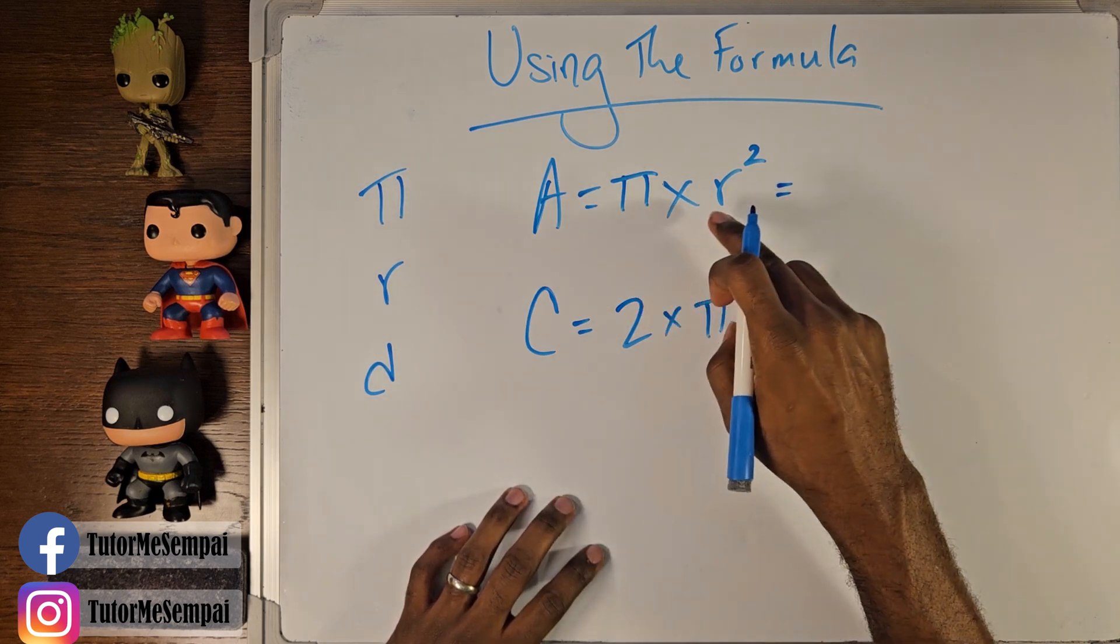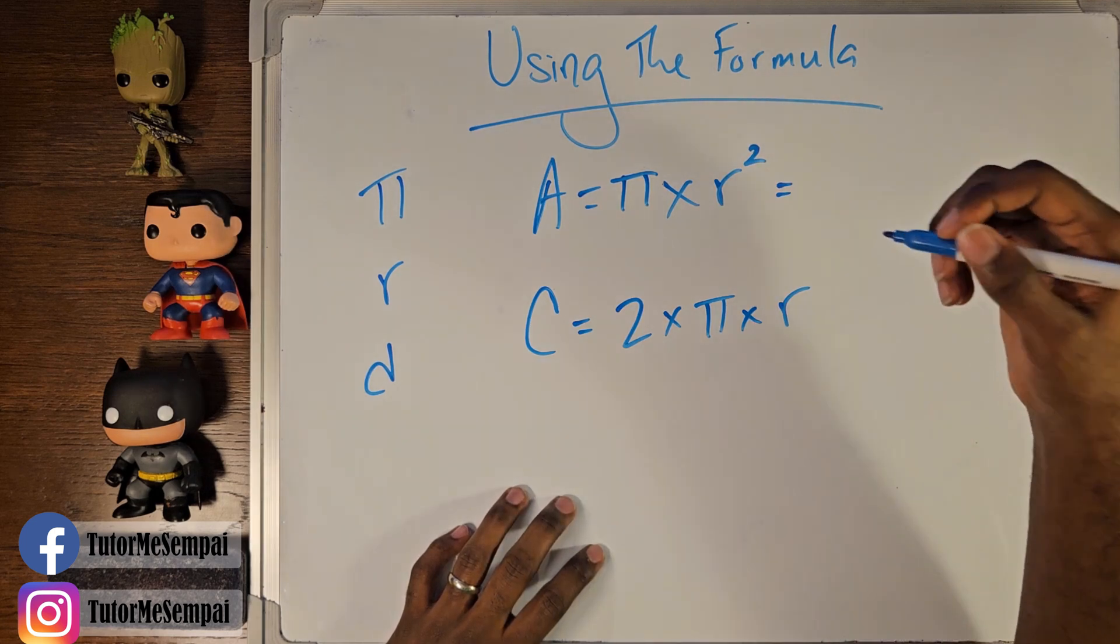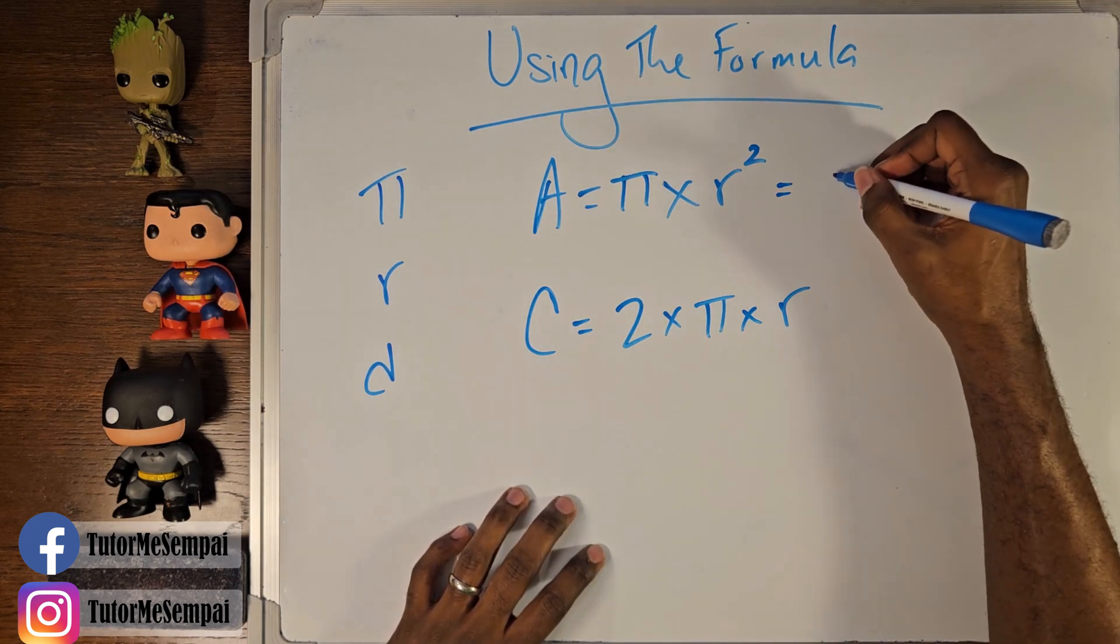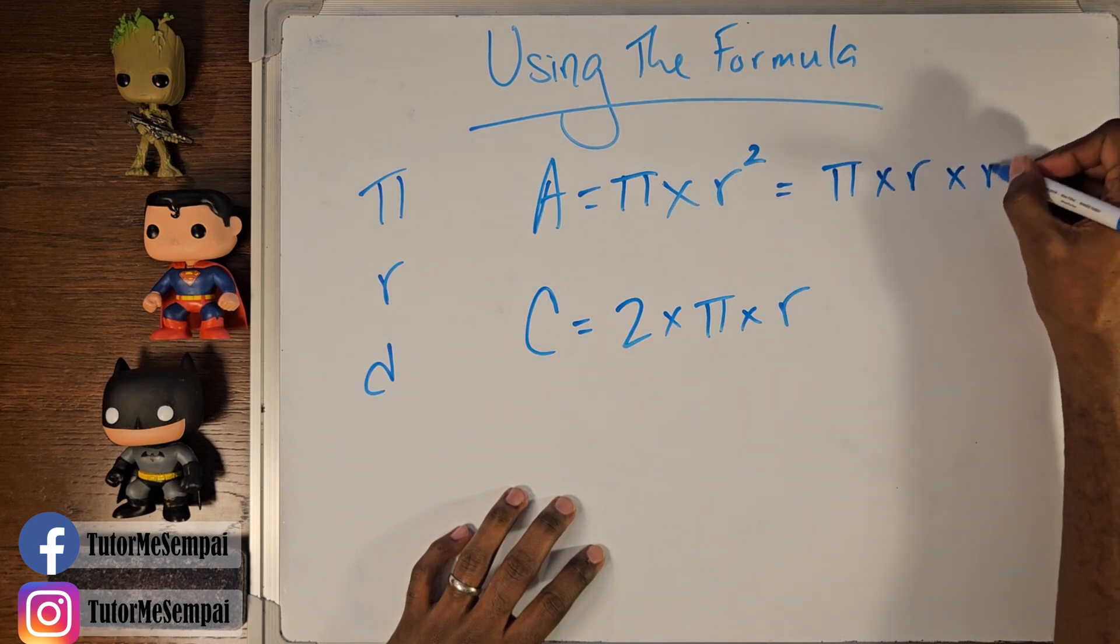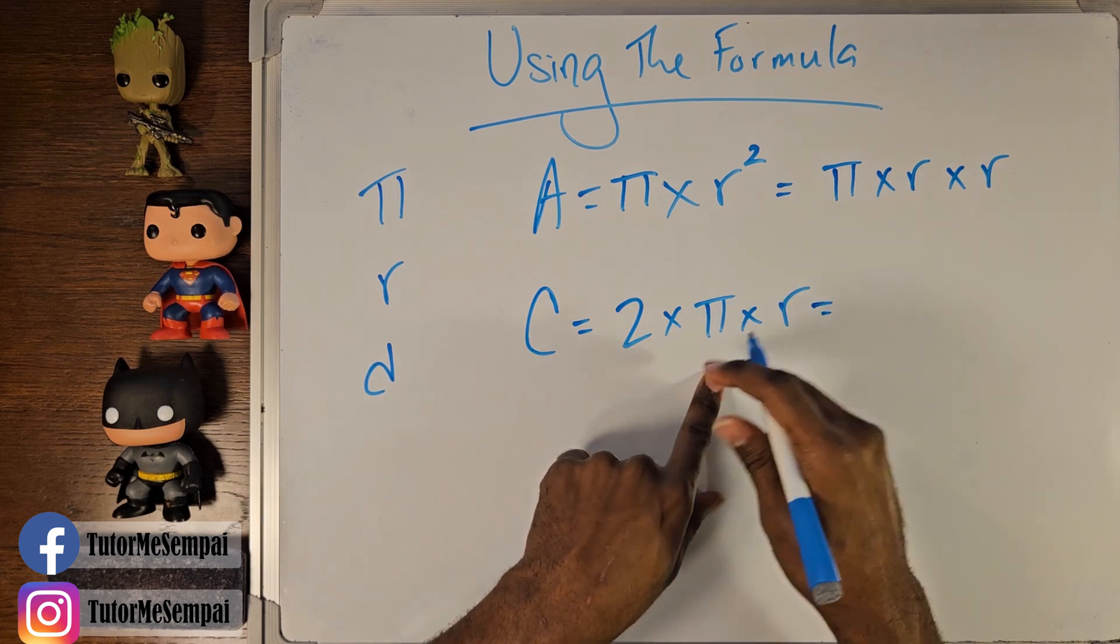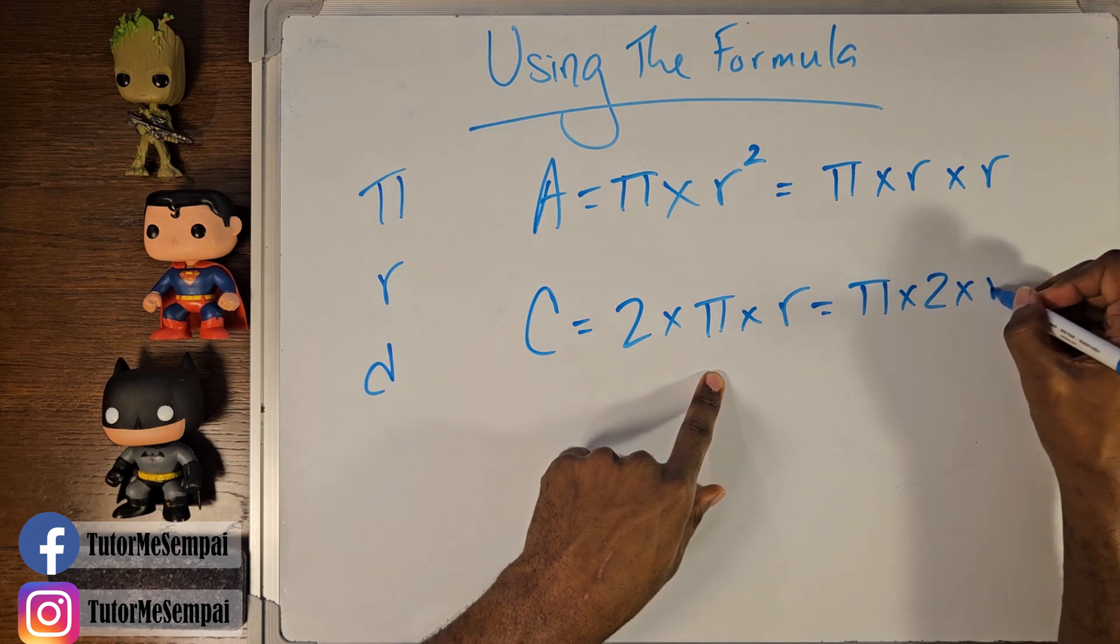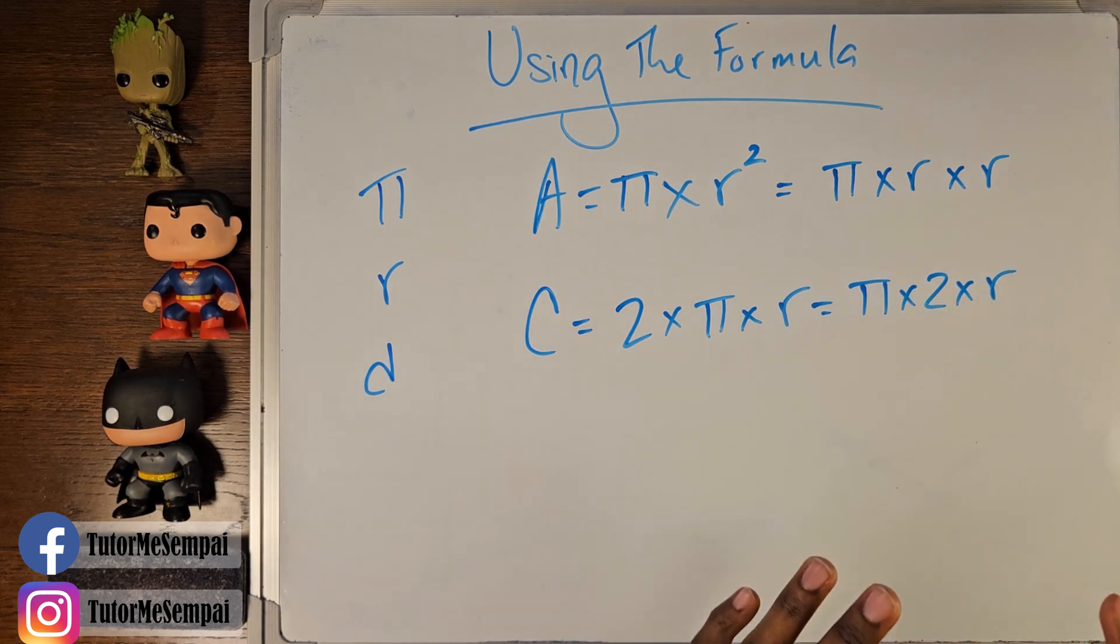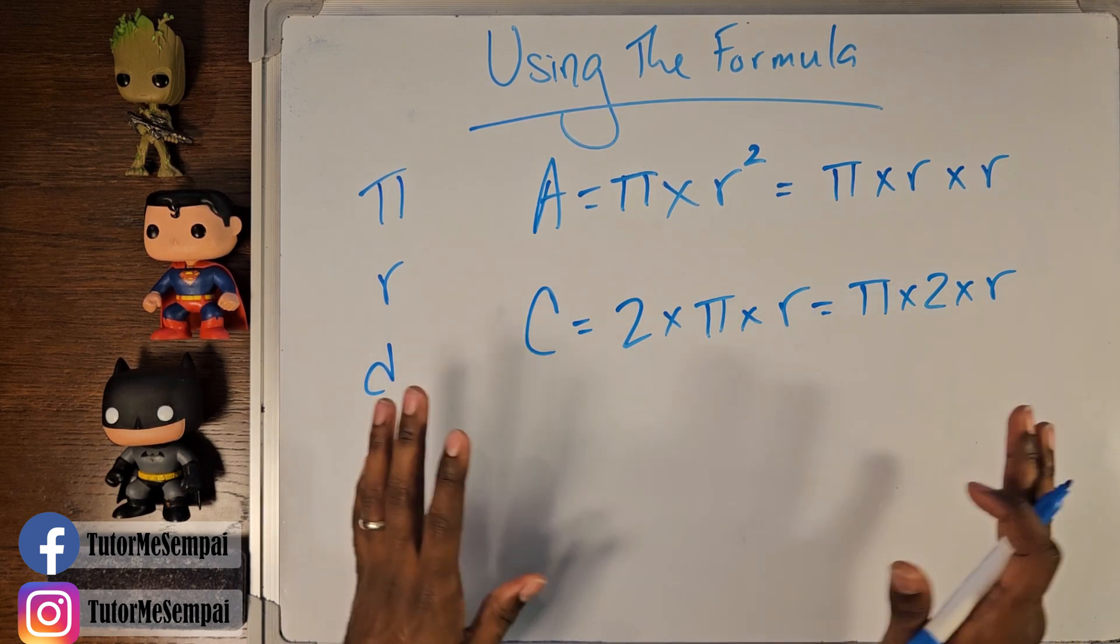Now what is pi times r squared? What is r squared? Well, r squared is r times r. So when you write it out like this, pi times r times r, it looks kind of similar, especially if you rewrite this as pi times two times r. Looks very, very similar. It's very easy to mix these up. Don't do it.